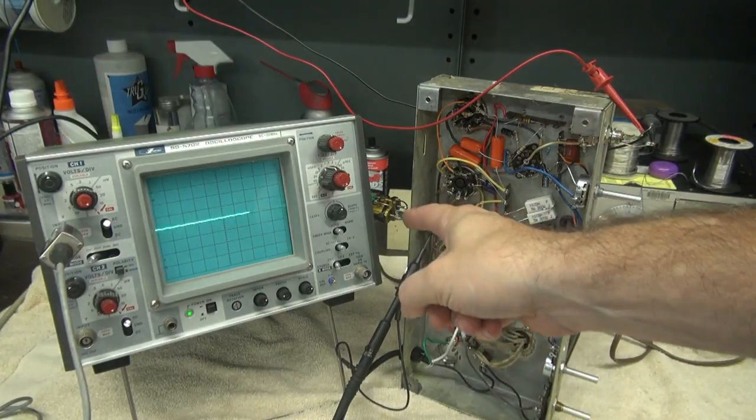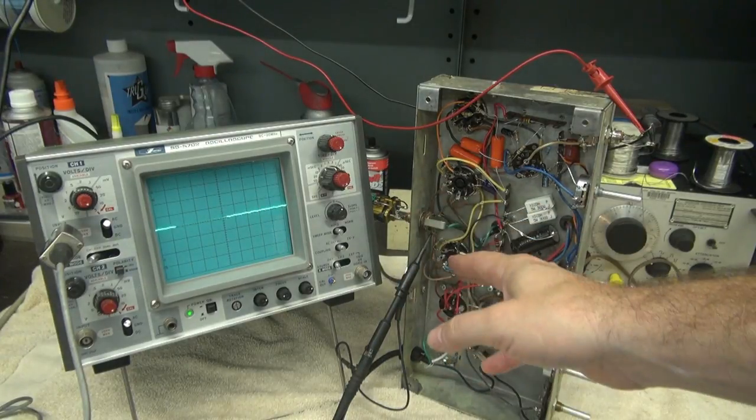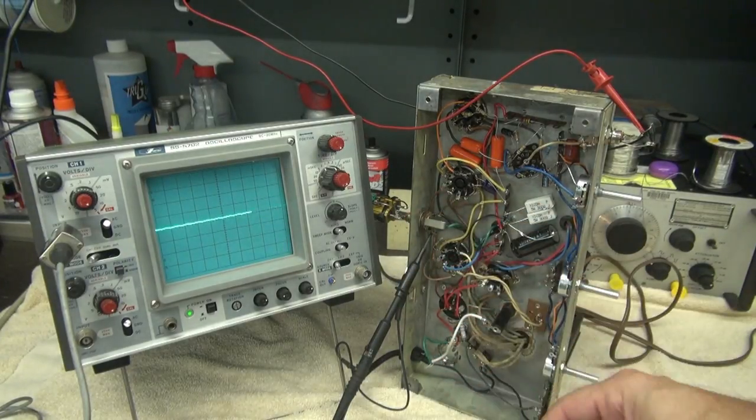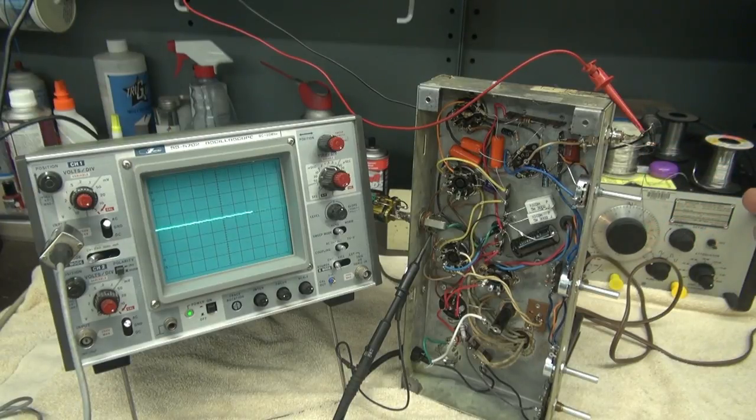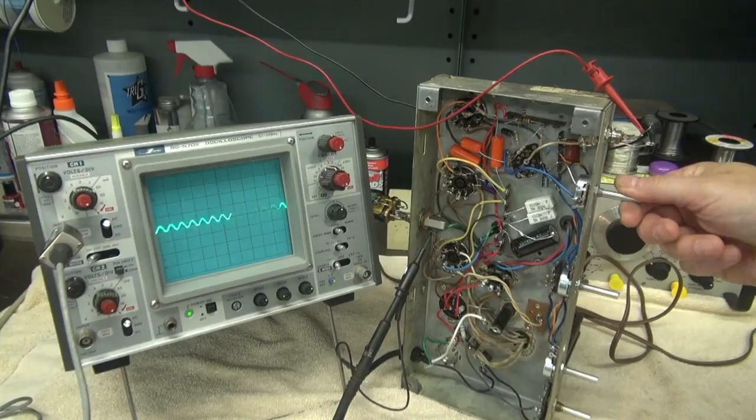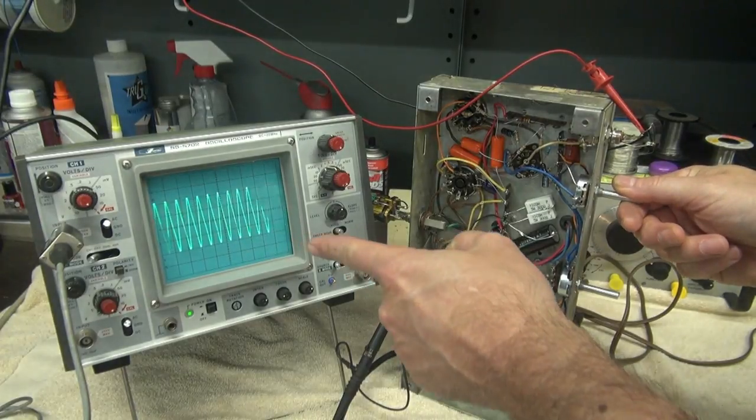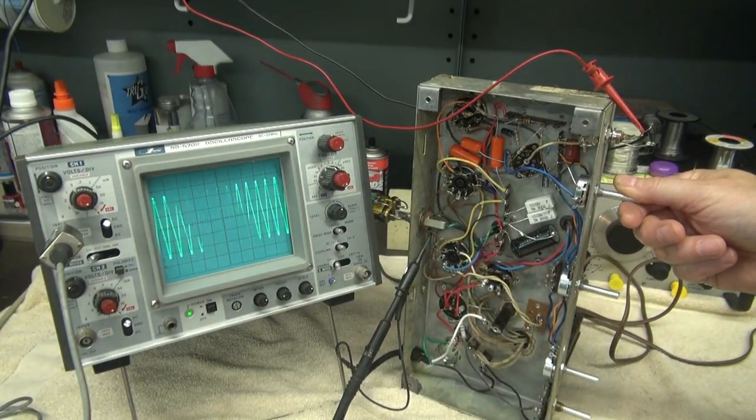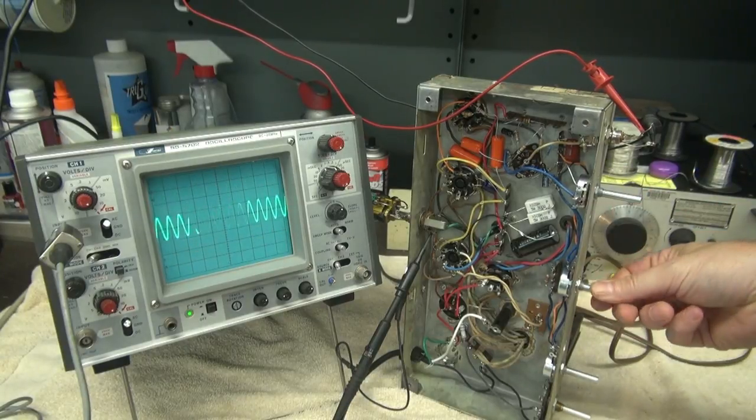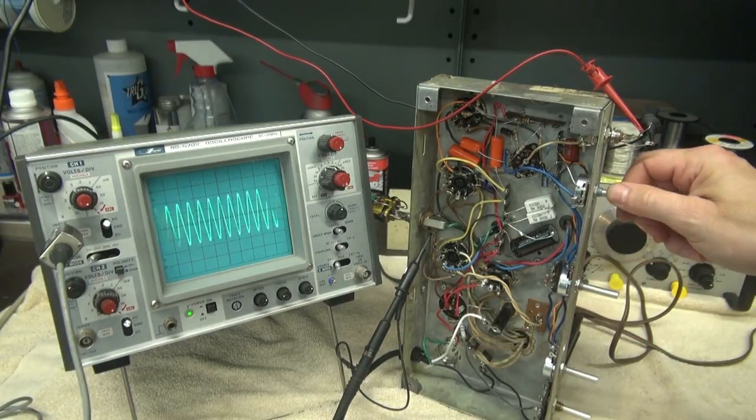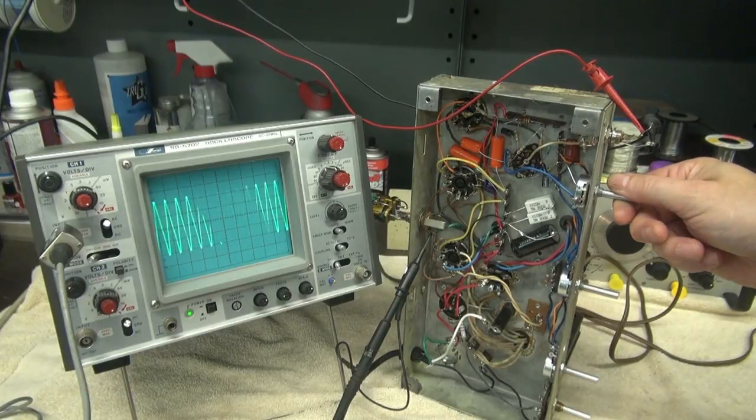So for the test I now have a dummy load attached. We're still monitoring across the speaker jack and I have the input from audio generator at approximately one kilohertz. Now I'm going to bring up the volume. You see on the scope there's a nice pretty sine wave, looks good right? Now I'm going to keep the treble back. Okay there's the treble, I'm going to keep it back. I'm going to go full volume. No issues.